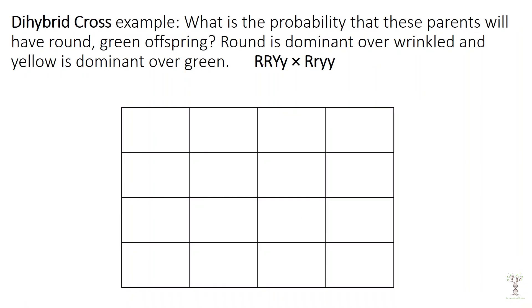Always draw 16 boxes and all possible gametes for each parent. It doesn't matter if mom is at the top or the side — use capital letters for dominant traits, make sure gametes have one of each chromosome, and figure out offspring the same way as for monohybrid crosses. Using the parents we just looked at, figure out all possible offspring phenotypes and genotypes, then determine the probability that these parents will have offspring that are round and green.